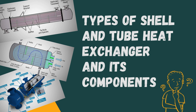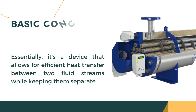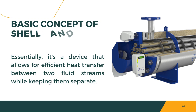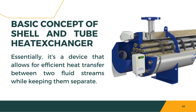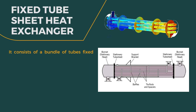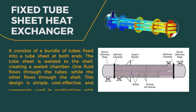Before we delve into the types, let's quickly recap the basic concept of a shell and tube heat exchanger. Essentially, it's a device that allows for efficient heat transfer between two fluid streams while keeping them separate. Our first type is the fixed tube sheet heat exchanger.